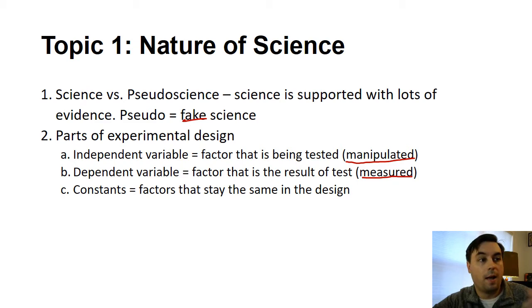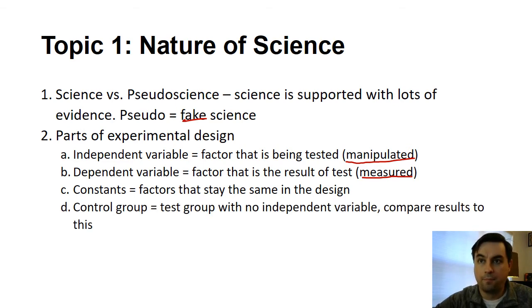Everything that was the same that remained in all the test groups would be examples of constants. For instance, the temperature of the water, the amount of water, the amount of yeast, the size of the flask, the quality of the balloon, the size of the balloon, the color of the balloon, the amount of time that we use in all of the experimental designs - those would be constants in that experiment.